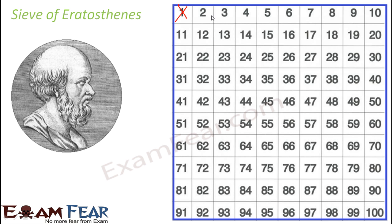Now the next number that we encounter is 2. Is 2 a prime number? Yes, 2 is a prime number because 2 has only two factors: 1 and itself. So we have encircled 2.